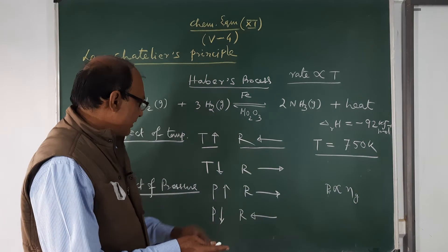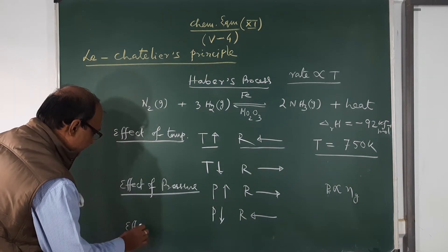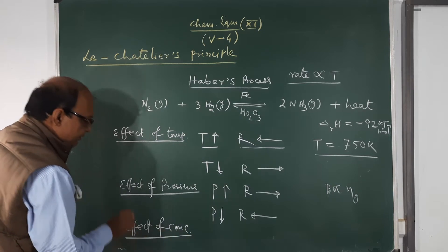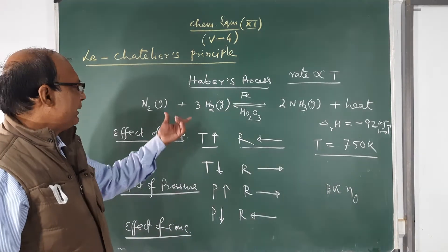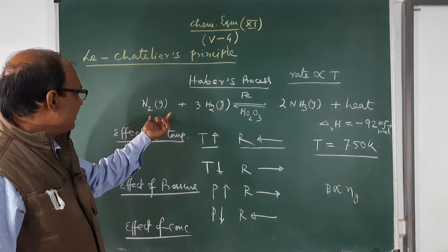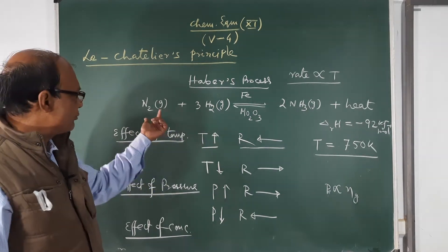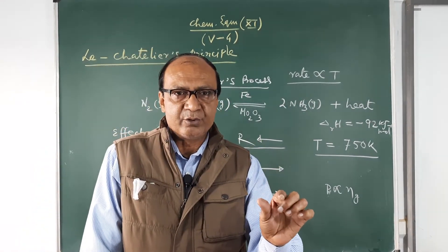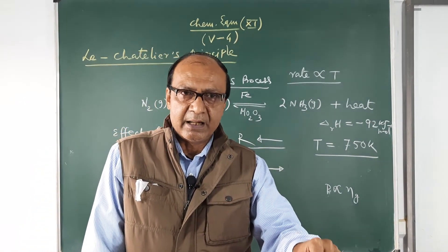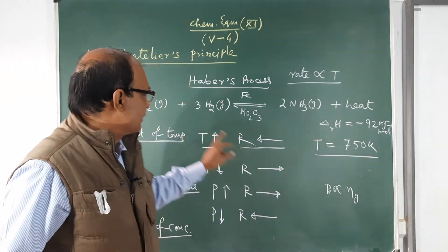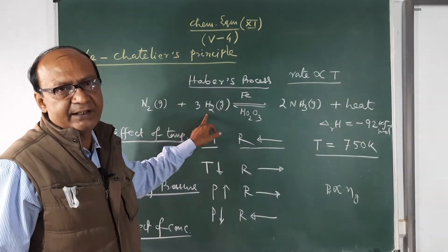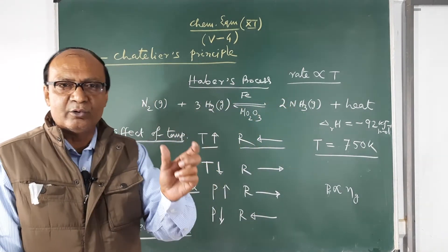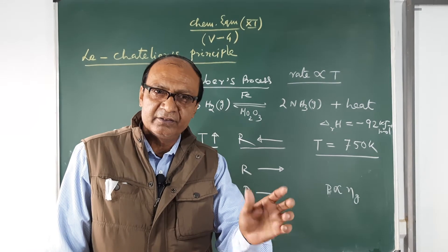Now consider the effect of concentration. If you add a mixture of nitrogen and hydrogen into the system after the attainment of equilibrium, the concentration of the reactants will increase. Automatically, the reaction will favor the forward direction in order to consume the added reactants.